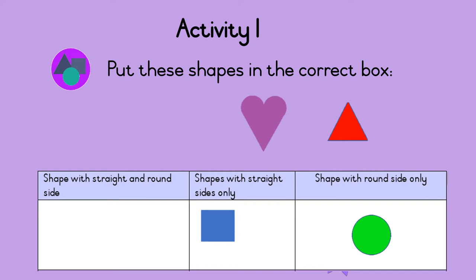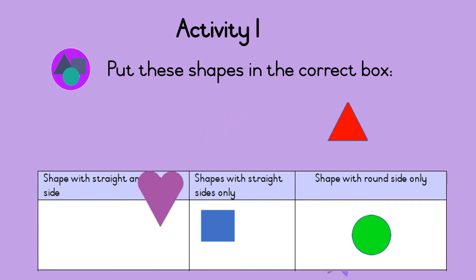What about the heart? The heart has two round sides and two straight sides. So the heart goes in the box for shapes with straight sides and round sides.